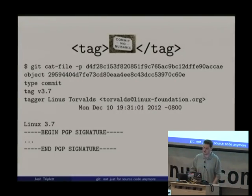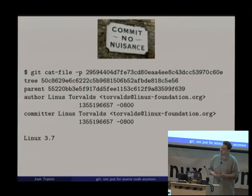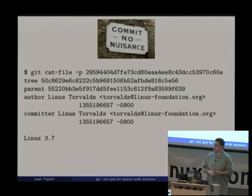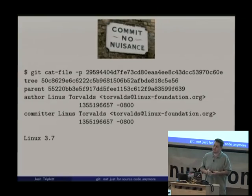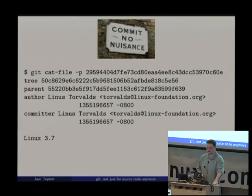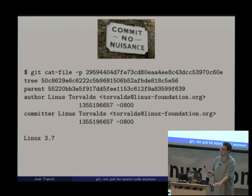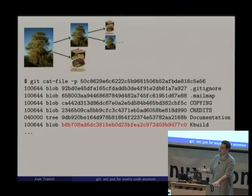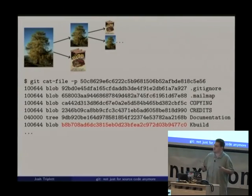A commit is a hashed object that contains a tree reference and a parent commit for every commit other than the very first one. This creates a graph of commits — for programmatic use you'll frequently just have a linear chain, but you can create arbitrary topologies. You've got metadata: who wrote the commit, who actually did the commit, and a message. Trees just contain trees and blobs recursively — just like a filesystem, think of directories and files as trees and blobs.